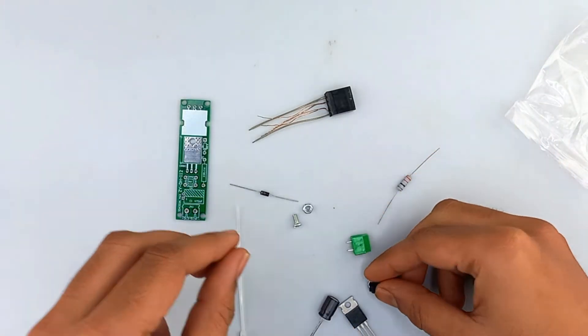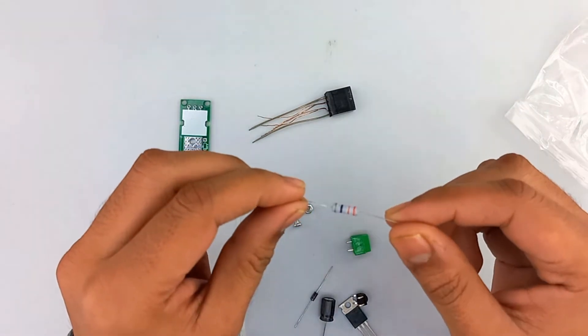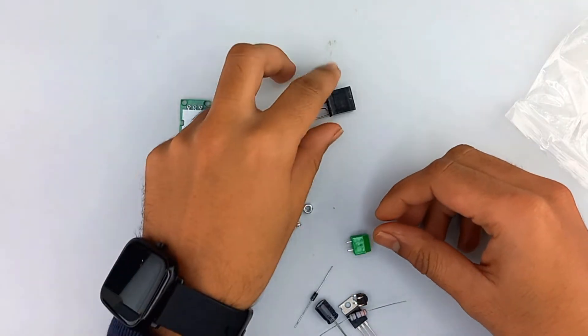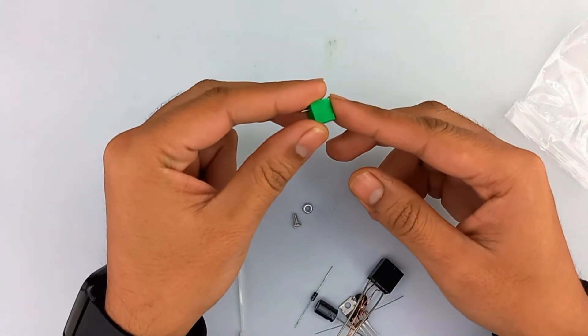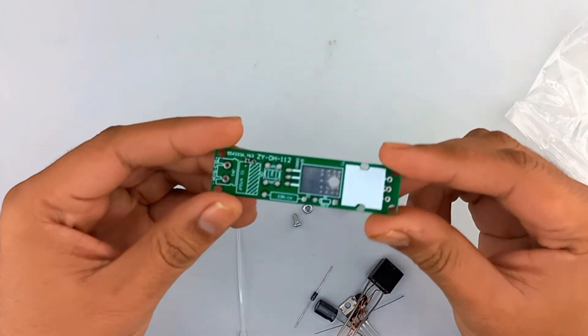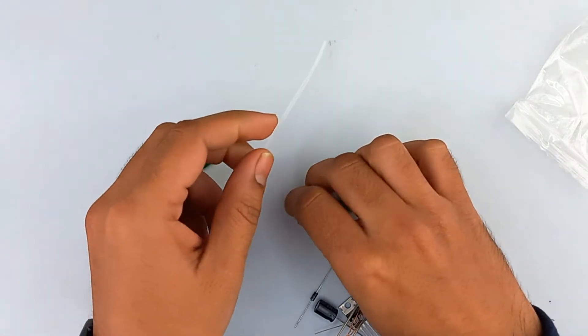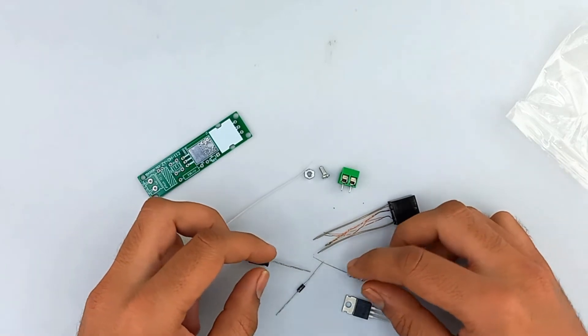Diode 4007, 33 ohm resistor 1 watt rating, a coil that will produce arc, DC connecting terminal, PCB where we can do our soldering, and one zip tie and bolt. Now let's solder all these components over the PCB.